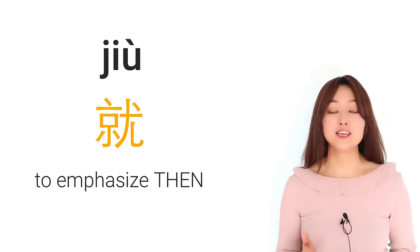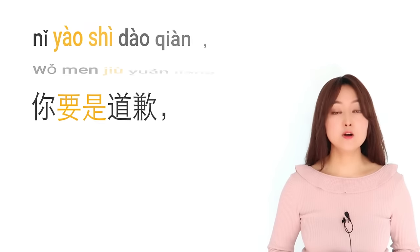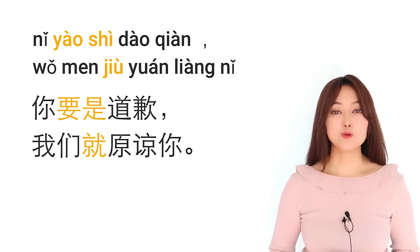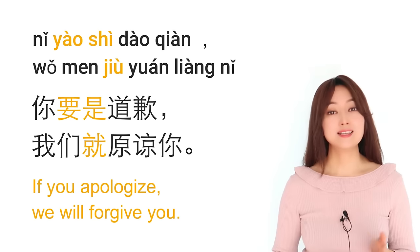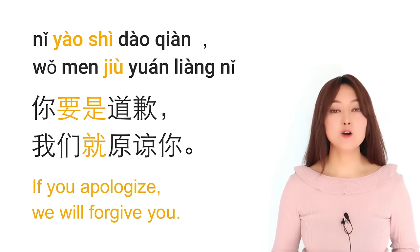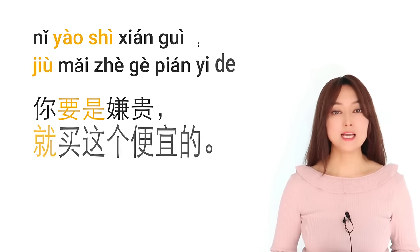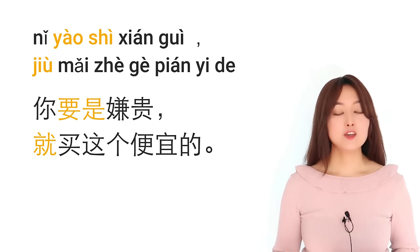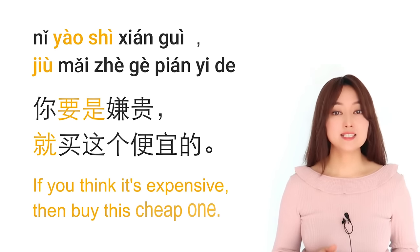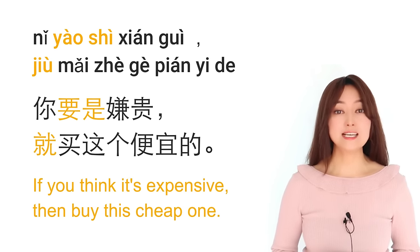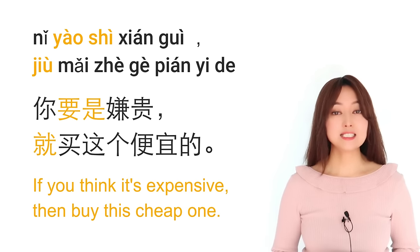Just like with 如果, we can add 就 after 要是 to emphasize 'if A, then B.' For example: 你要是道歉，我们就原谅你 — if you apologize, we will forgive you. Another example: 你要是嫌贵，就买这个便宜的 — if you think it's expensive, then buy this cheaper one.